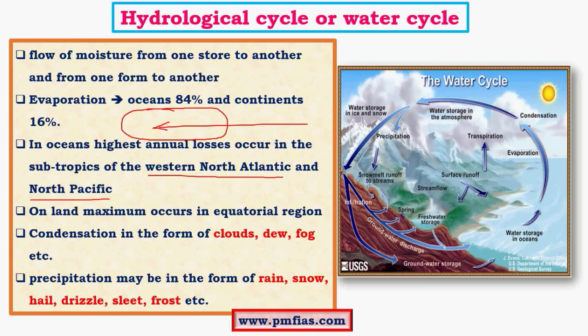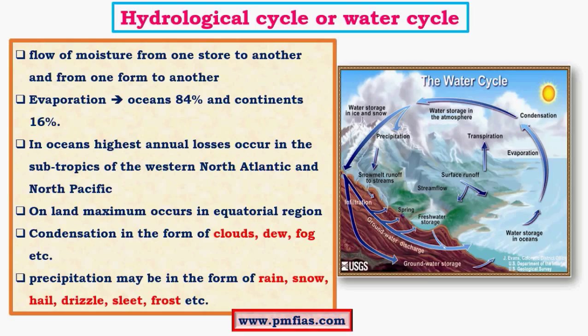On land, maximum evaporation values occur in equatorial regions where there are equatorial rainforests. These very dense forests have significant evapotranspiration — transpiration being the loss of water content by plants through their leaves. This transpired water vapor, combined with significant rainfall in the form of thunderstorms, leads to good amounts of evaporation.